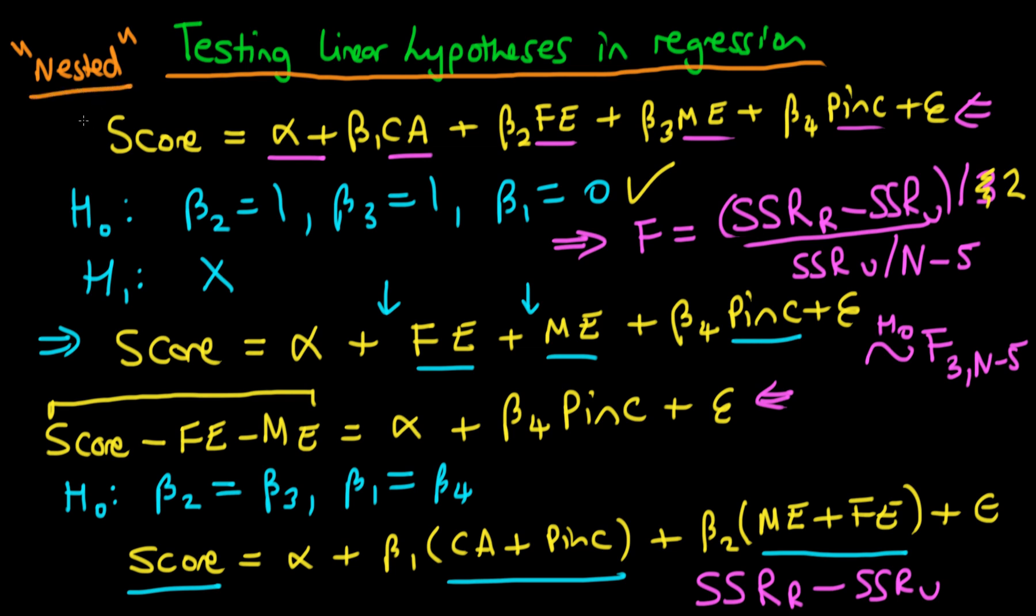If we want to test or compare non-nested forms, that might be comparing this original regression here with a regression which doesn't have parental income in it and let's say has the distance from school D. Notice that there's no way we can get to this other model from placing restrictions on the original model. So it is not a nested form. So we call it an un-nested model.